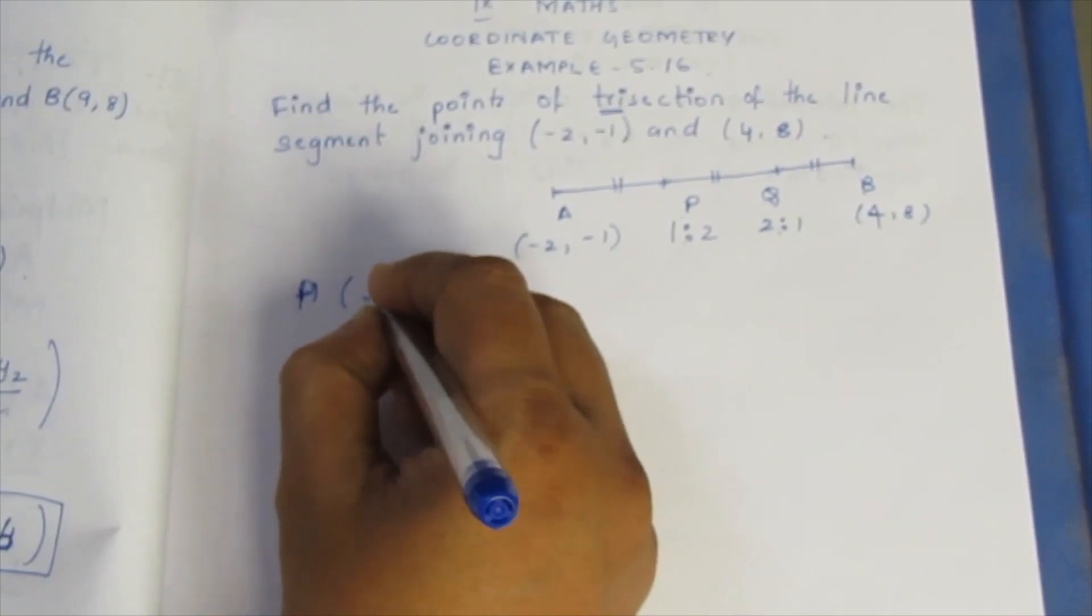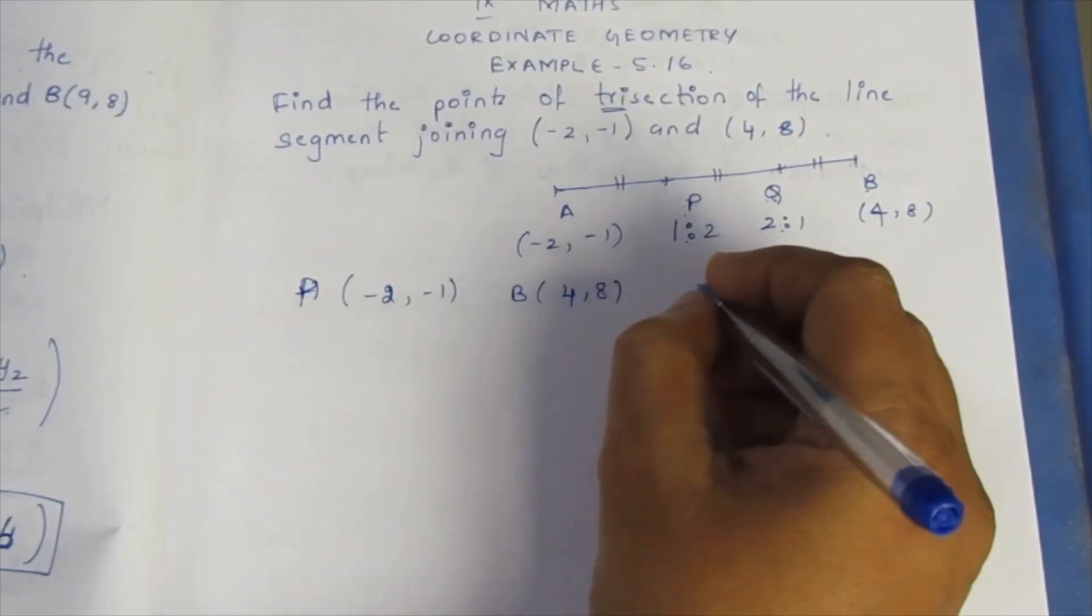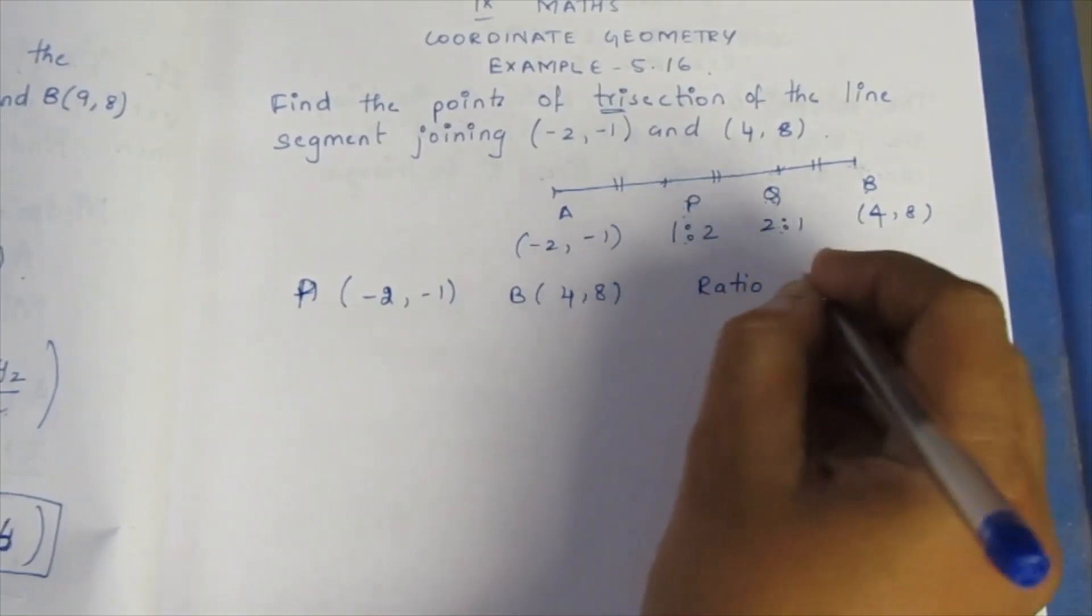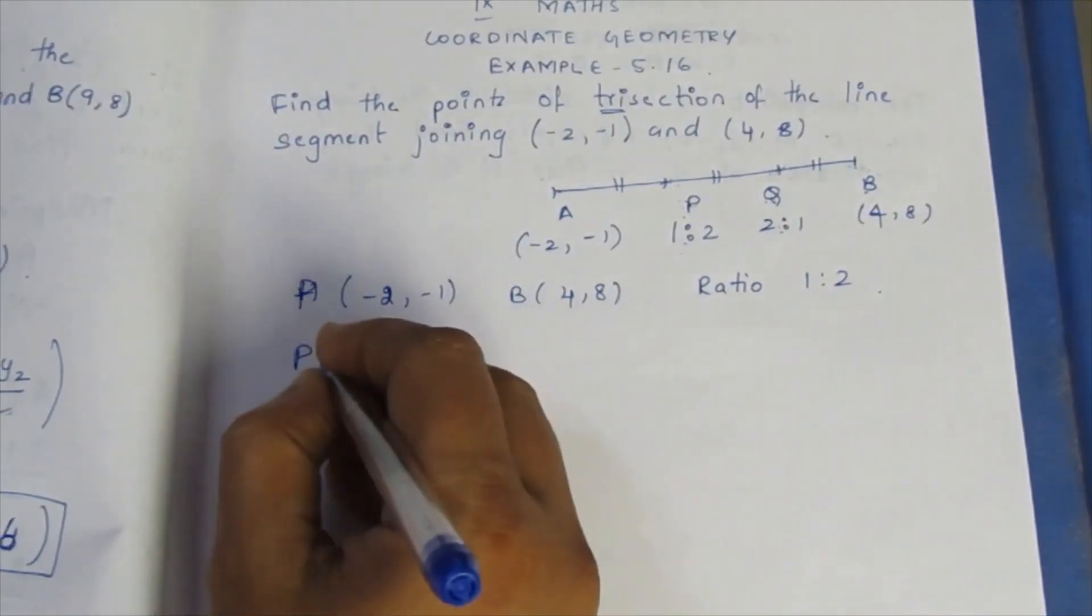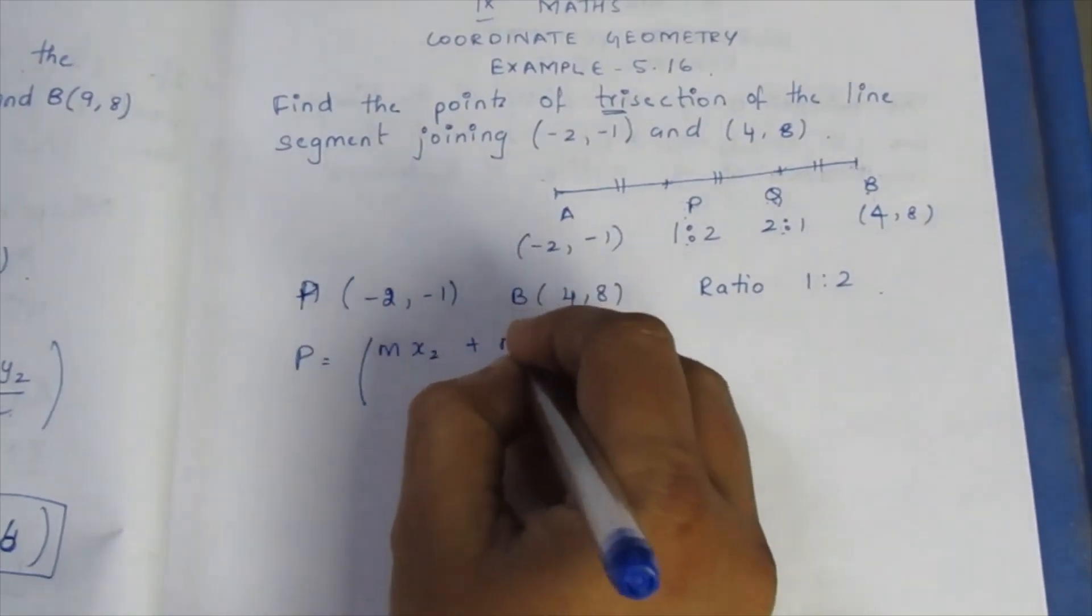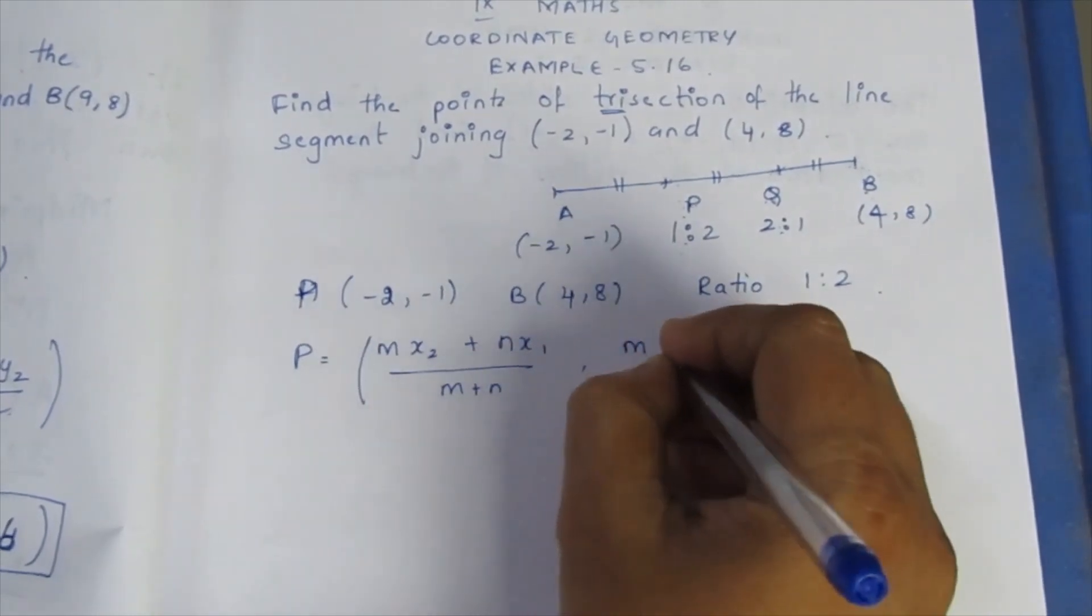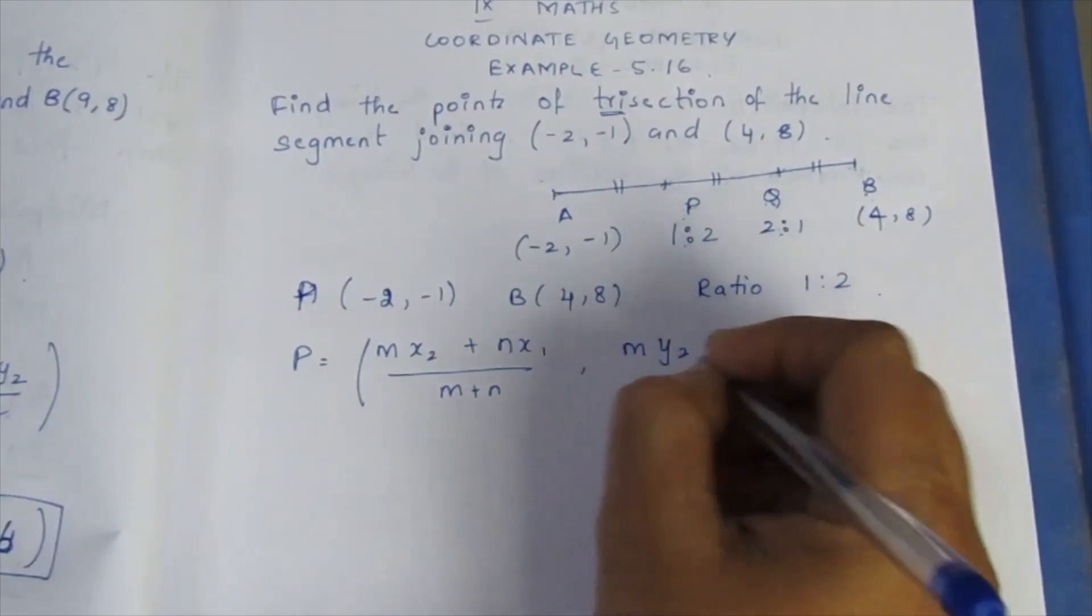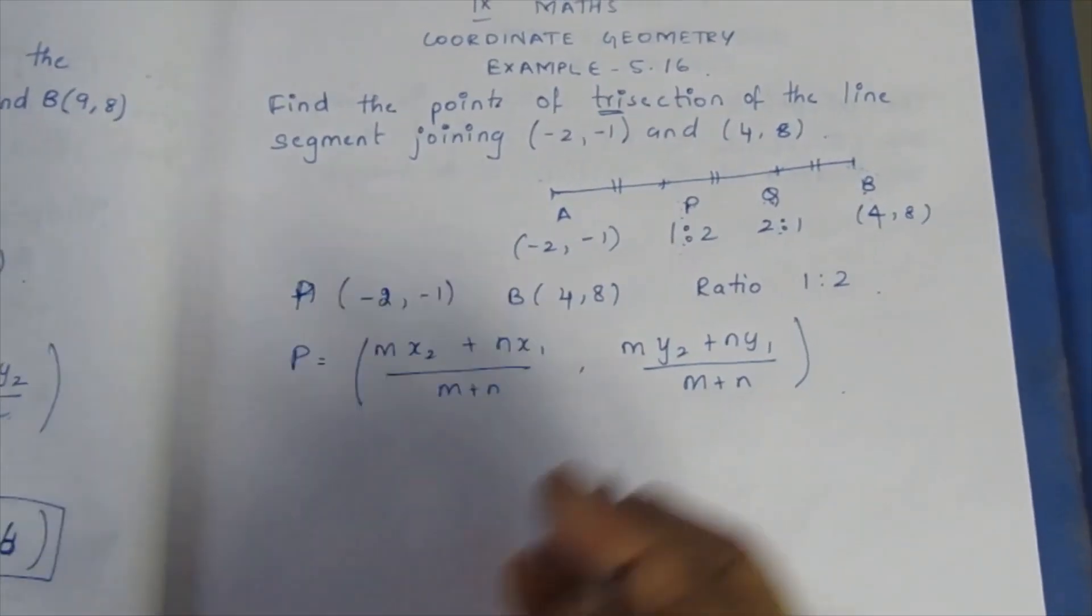A and B: A is (-2, -1), B is (4, 8). The ratio is 1 is to 2. This is P. Formula: mx2 plus nx1 by m plus n, my2 plus ny1 by m plus n.